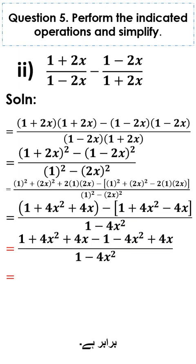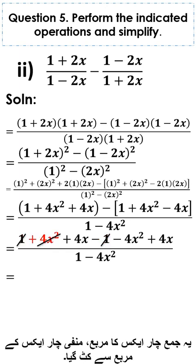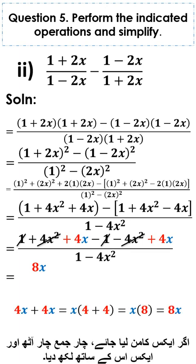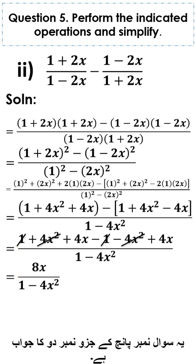The result is 8x divided by 1 minus 4x square. This is the answer of part 2 of question number 5.